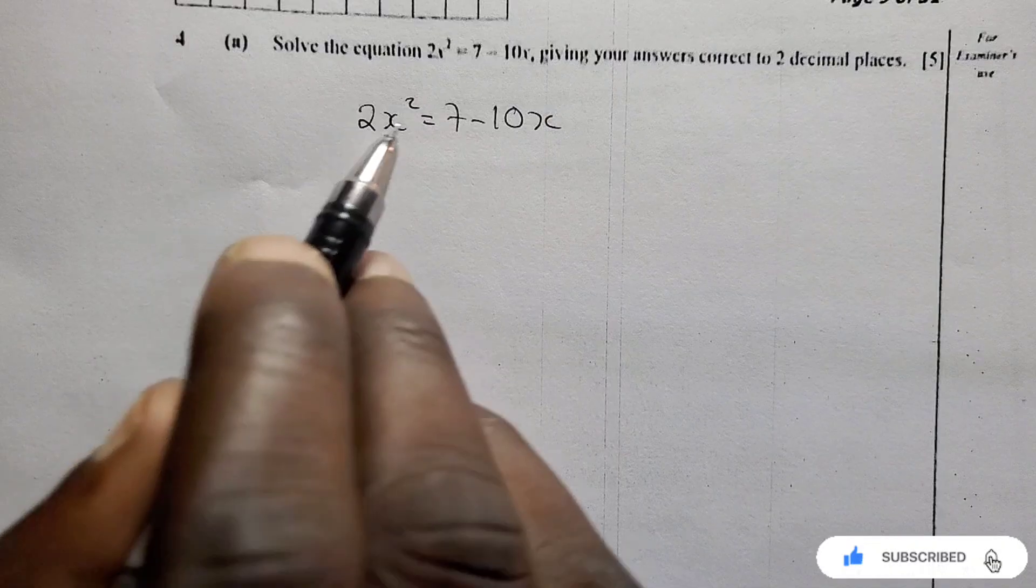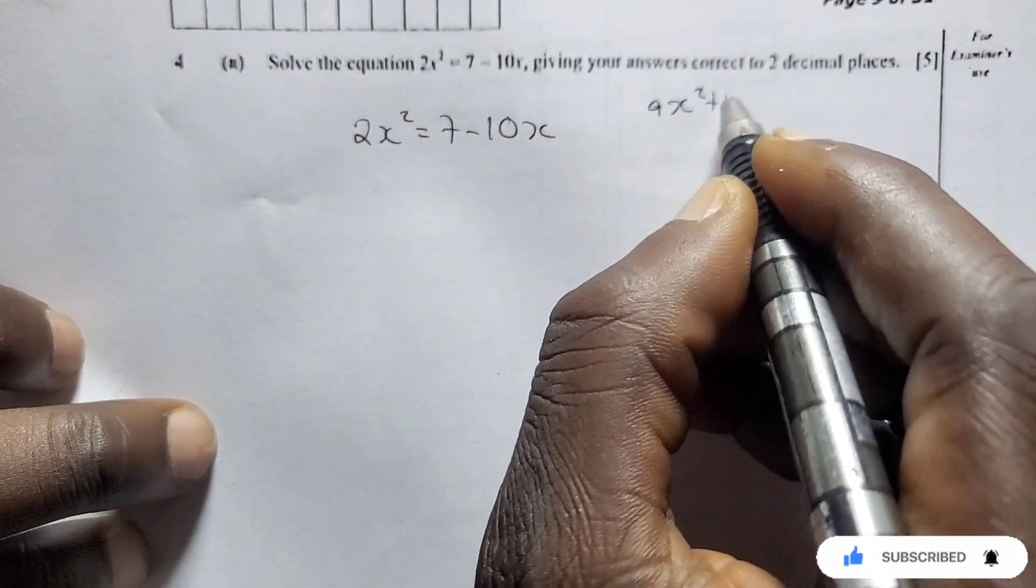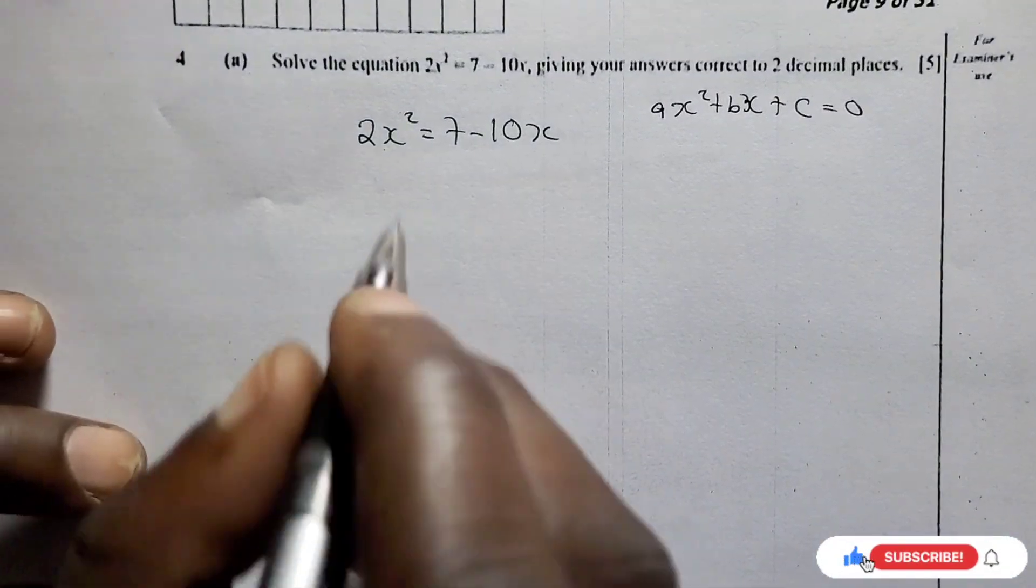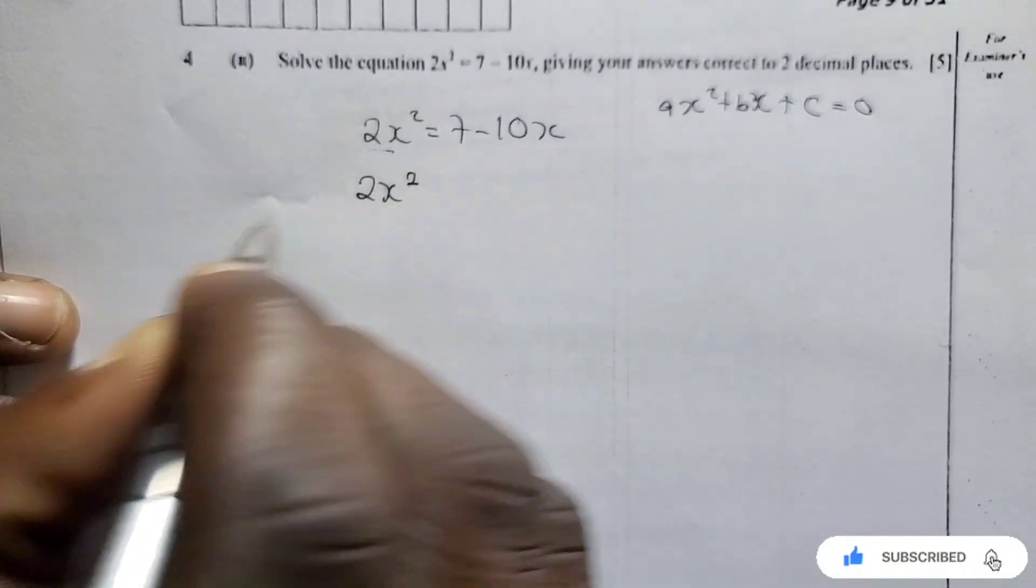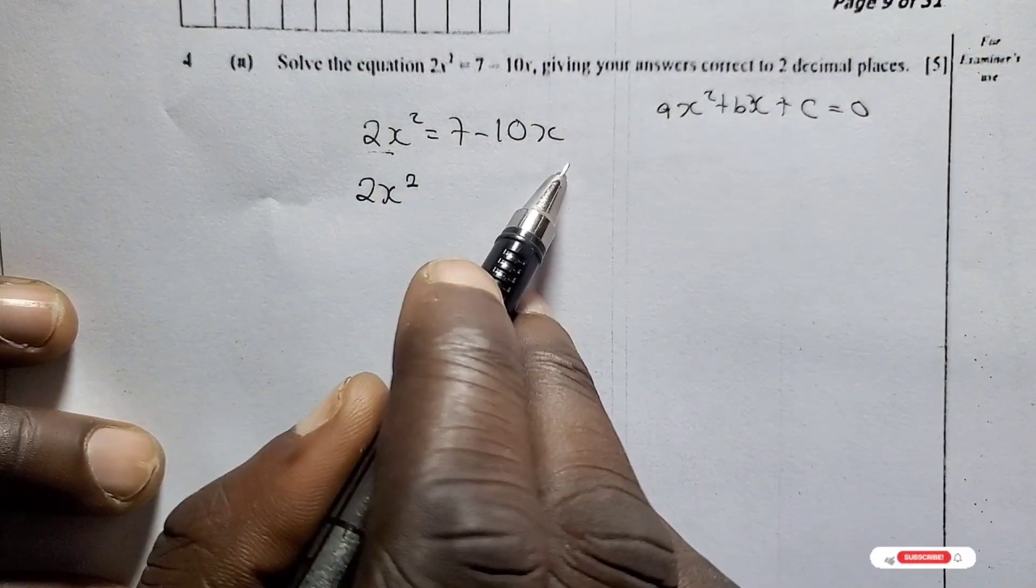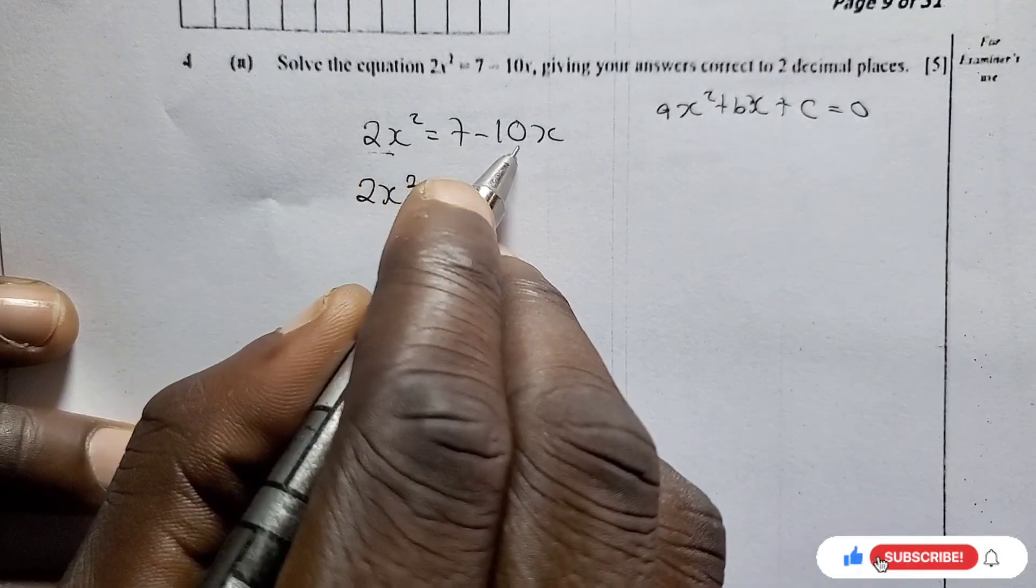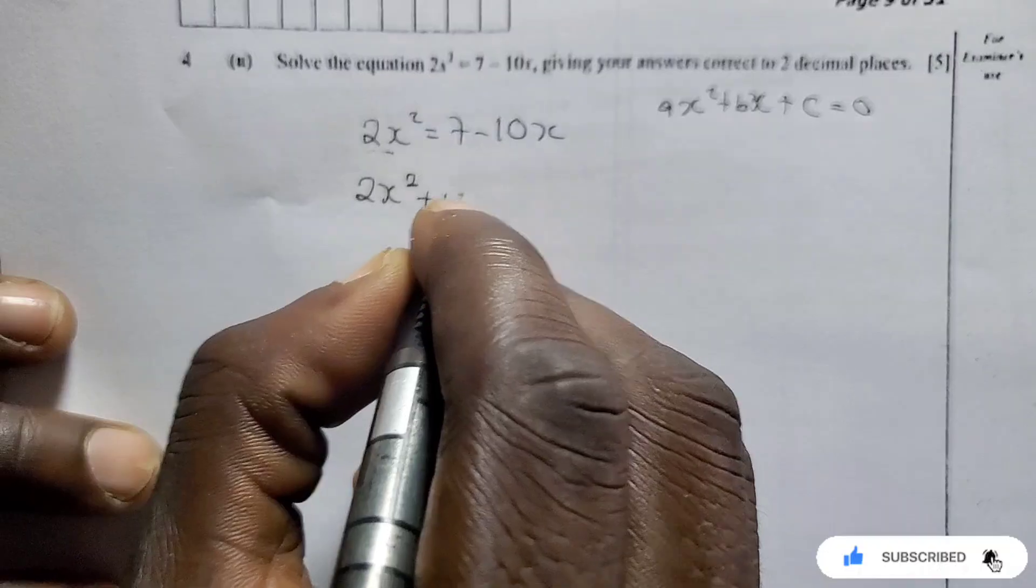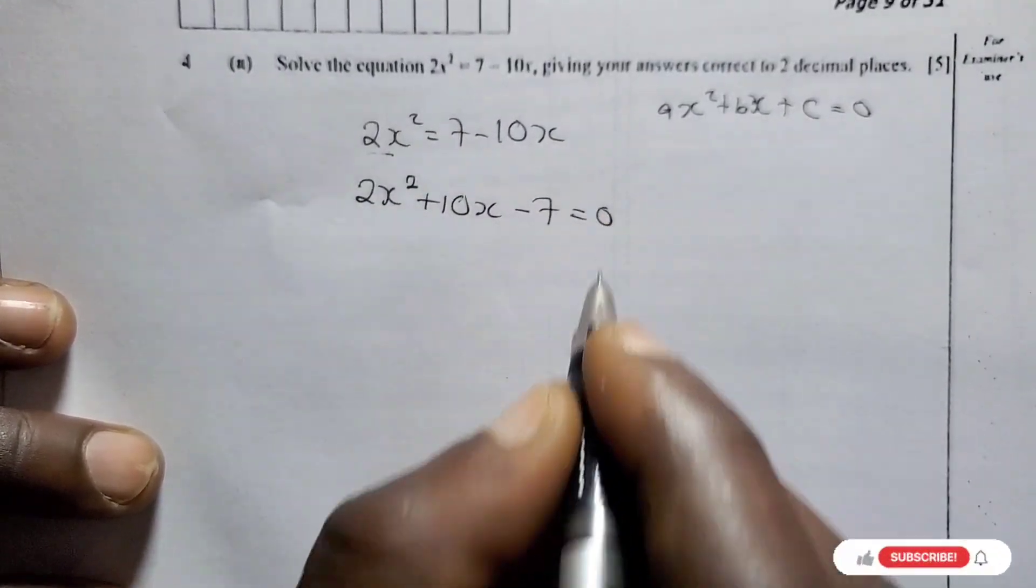And this is 5 marks. So arrange this one in the correct form. The correct form is Ax squared plus Bx plus C equals 0. So here this 2x squared is already on the right side. These are not on the right side. These are on the wrong side of the equation. So we are going to take this one to the left hand side, and it's going to be positive 10x. Then this one is going to be negative 7 equals 0.